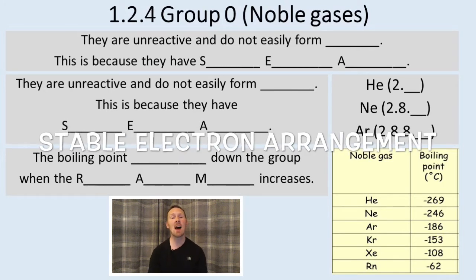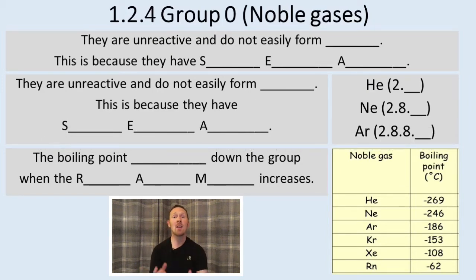The reason they don't react is they have an SEA, a stable electron arrangement. That means they've got a full outer shell. They don't need to gain or lose electrons to become stable.